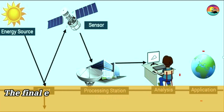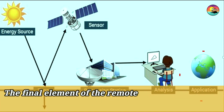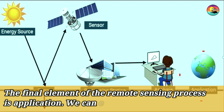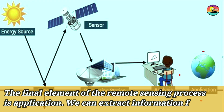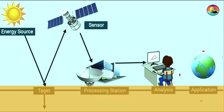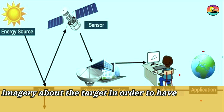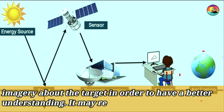The final element of the remote sensing process is application. We can extract information from the imagery about the target in order to have a better understanding. It may be some new information.